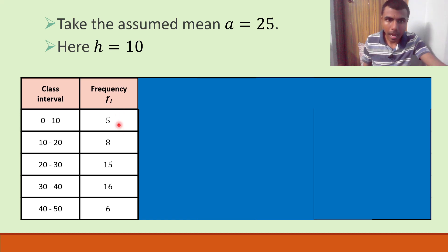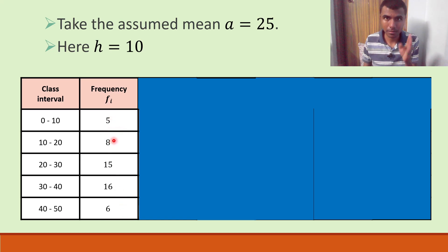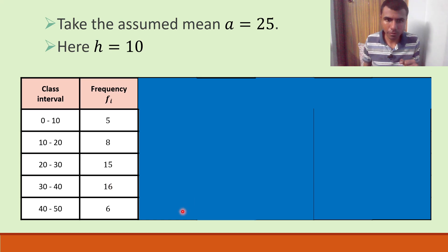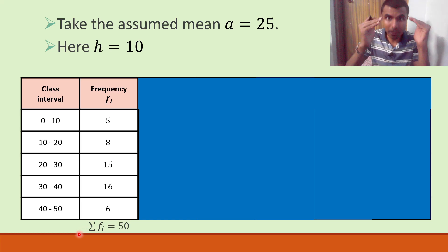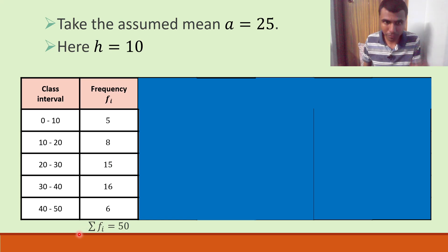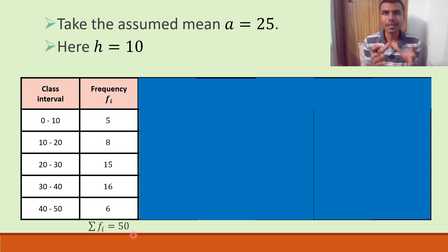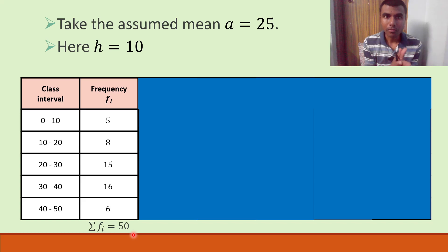First thing: add up the frequencies. 5 plus 8 is 13, 13 plus 15 is 28, 28 plus 16 is 44, 44 plus 6 is 50. So sigma fi — the sum of the frequencies — is 50.